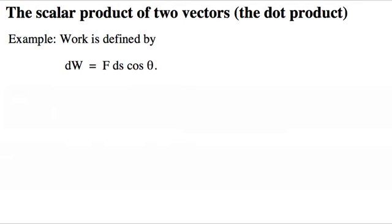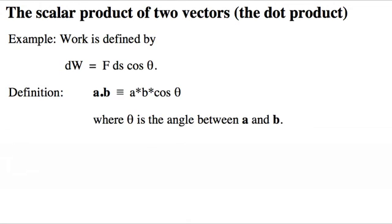We're using differential notation here because, in general, force varies with displacement. This application to work is one reason why we define the scalar product of two vectors like this. a dot b is defined as ab cos theta, where theta is the angle between a and b.